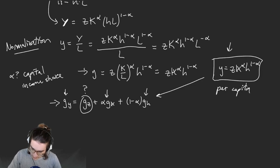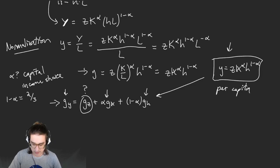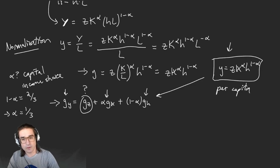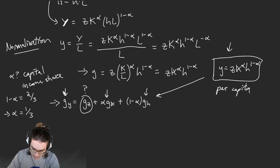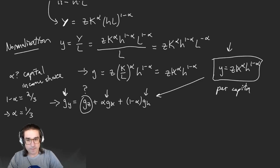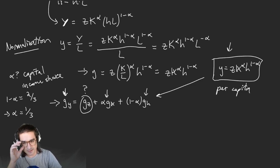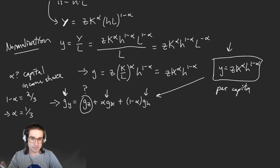Historically in the US, roughly two-thirds of total income has gone to labor — between 60 and 65%. That's remarkably stable, which gives us reason to have faith in this Cobb-Douglas production function: in a competitive market, you get a constant share of income going to labor and capital over time. So we don't need to worry about alpha — we kind of know what it is.